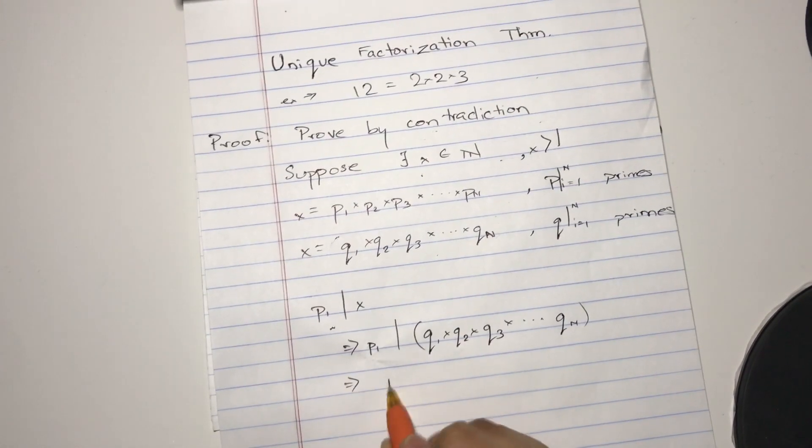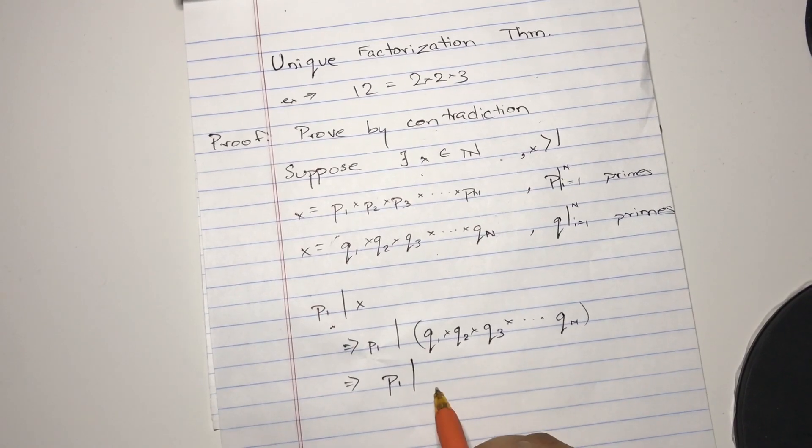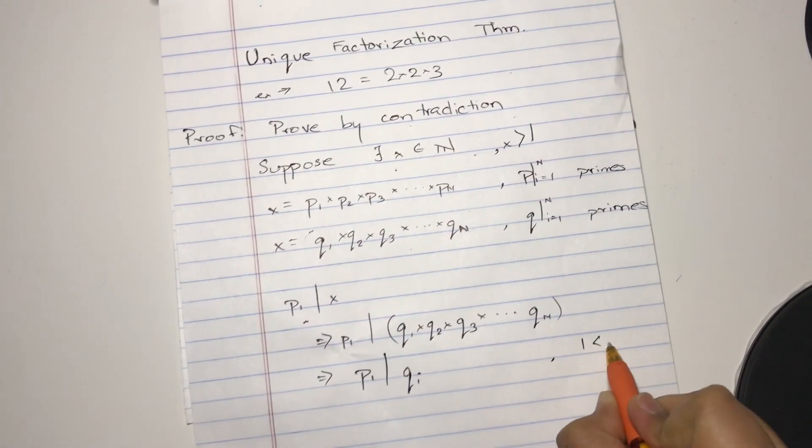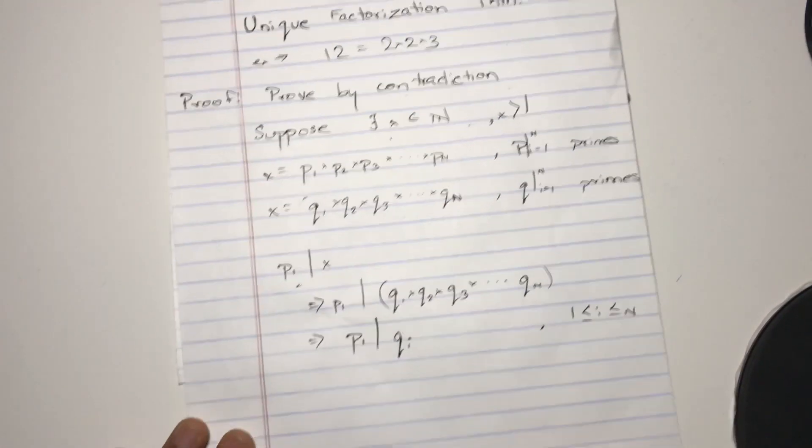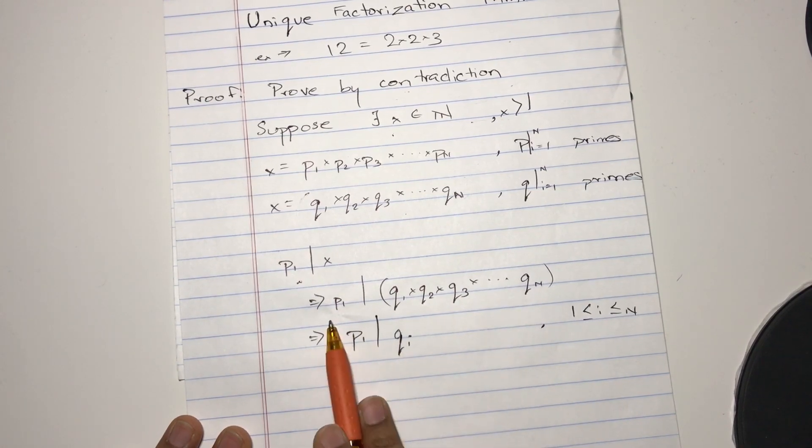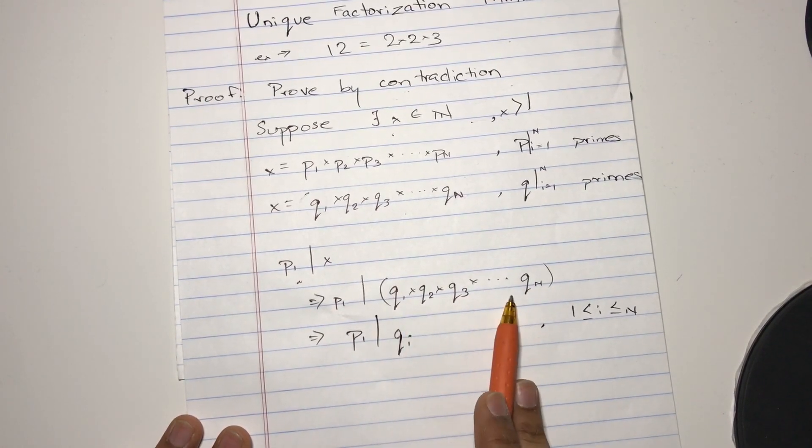Therefore, p has to divide some qi as that i is, i is between 1 to n. So if this is the case, p divides at least one of these, right?